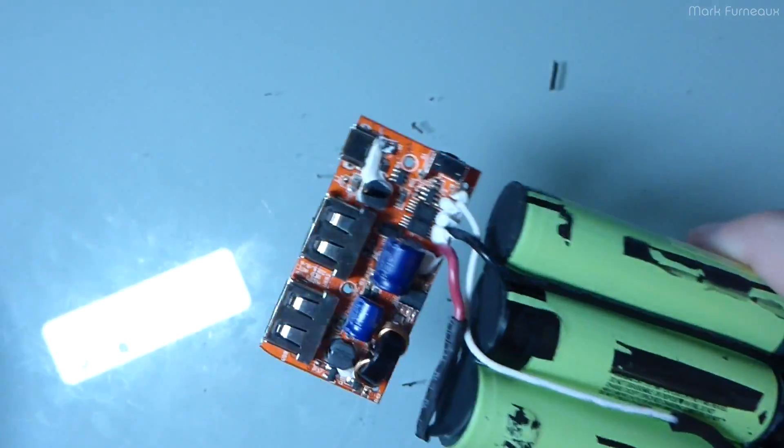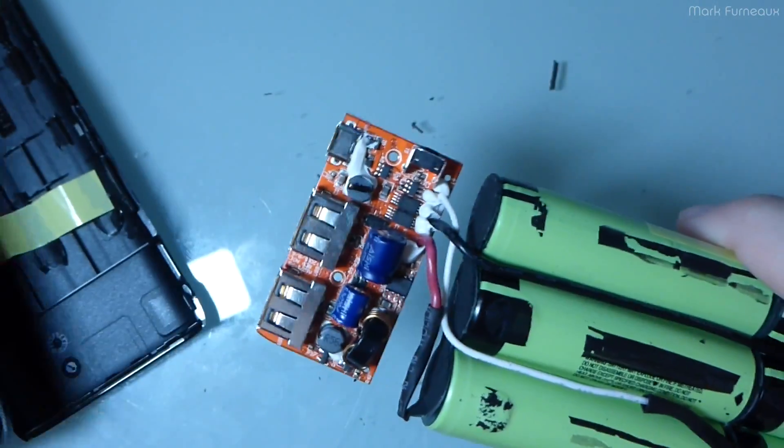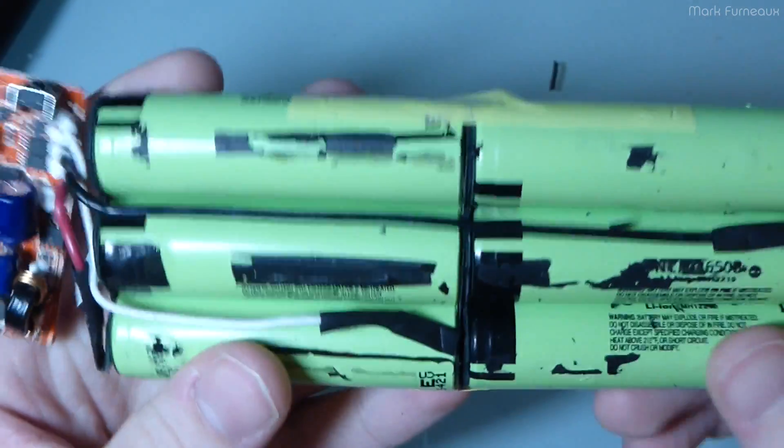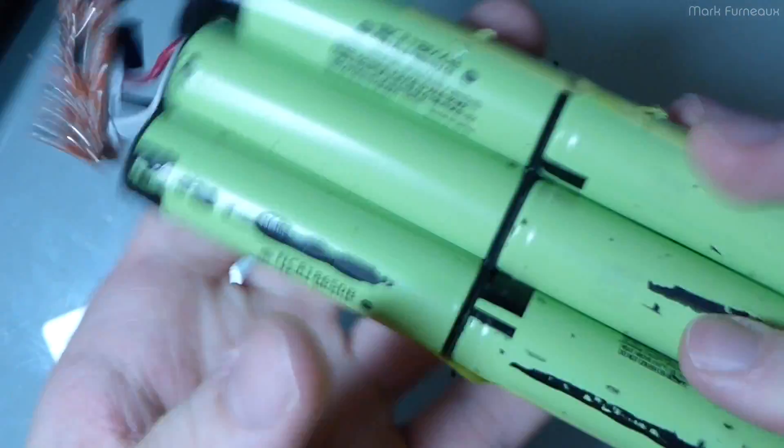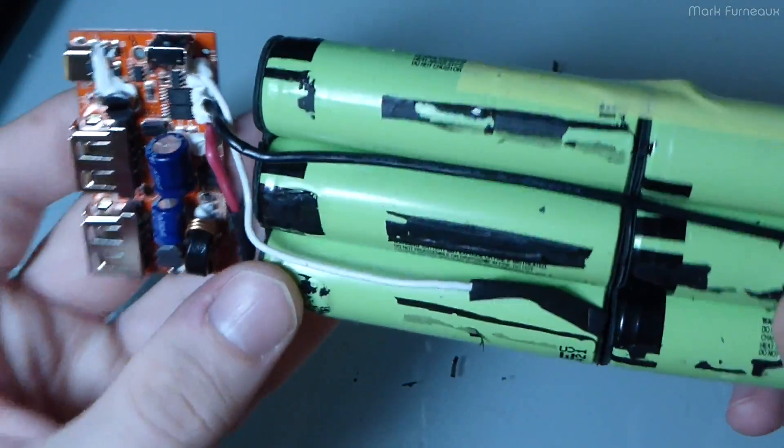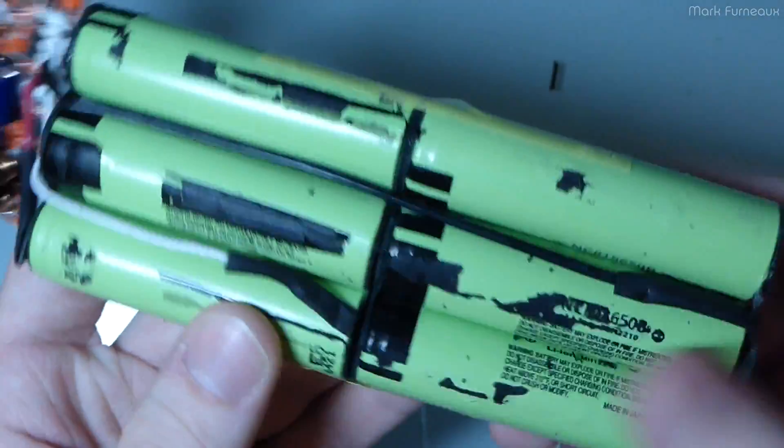This is just screwed in with two small screws into one half of the case. And yeah, I mean, there's not much else to say about this. It is just some batteries and a DC to DC, but it's decent from what I see and it's got some decent cells in it.